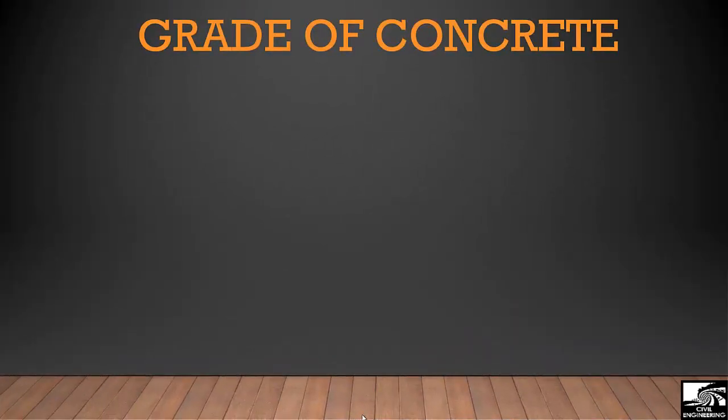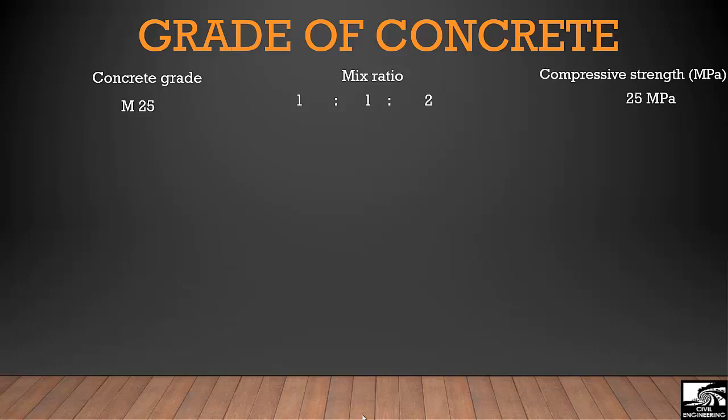Now to go into more details about grade of concrete, let's take an example of concrete grade of M25. Its mix ratio is 1 ratio 1 ratio 2 and it has a compressive strength of 25 megapascal. As I discussed before, M stands for mixed design and 25 shows the compressive strength of concrete in megapascal.